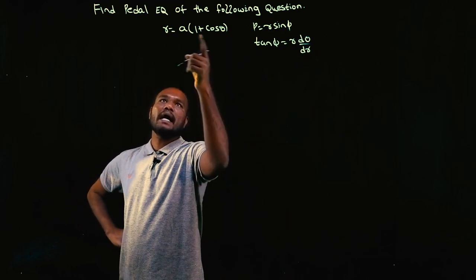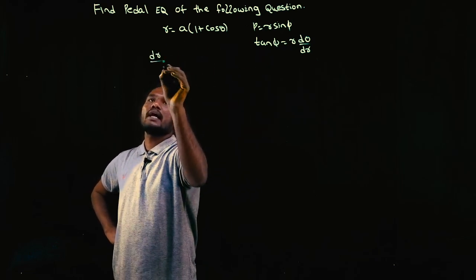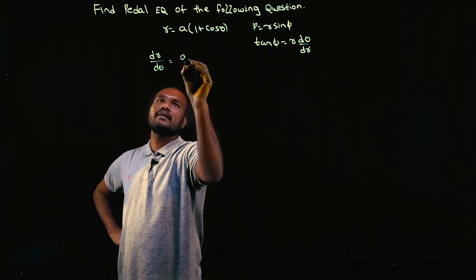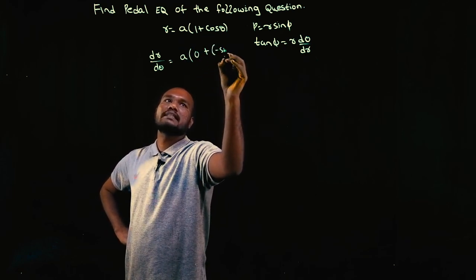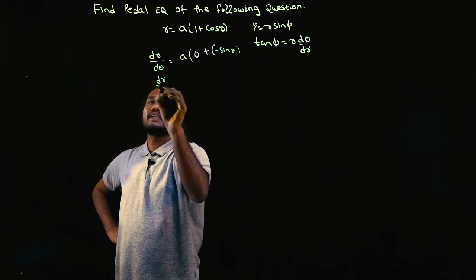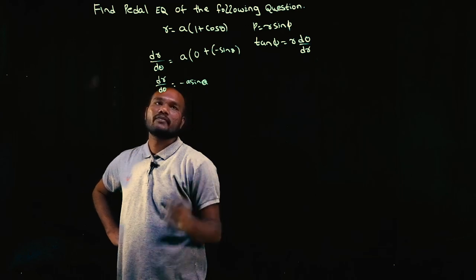So now R is directly given, so we have to find d theta by dr. Let's differentiate dr by d theta. A remains like that. Differentiation of 1 is 0 plus differentiation of cosine is minus sine theta. So dr by d theta is equal to minus A sine theta, right?